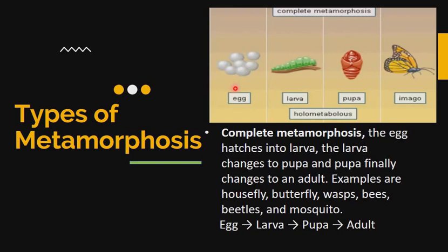The first stage is the egg, which hatches into larva. Then the larva changes into pupa, and the pupa changes into adult. These four stages make up complete metamorphosis. Examples of insects that undergo complete metamorphosis are housefly, butterfly, wasps, bees, beetles, and mosquito.